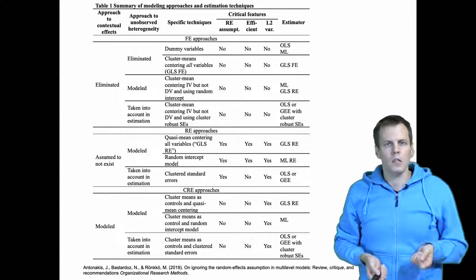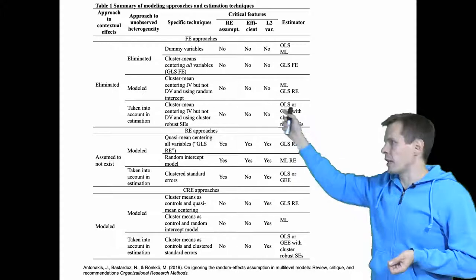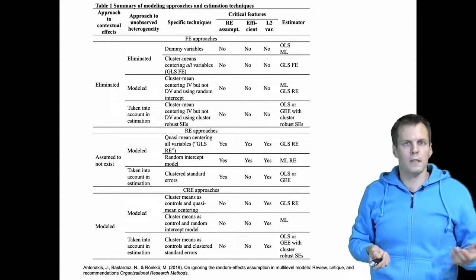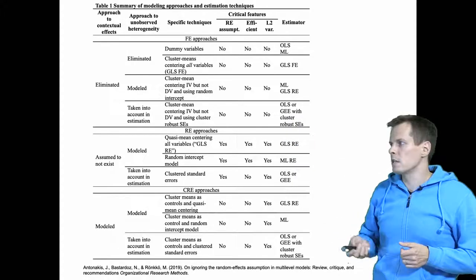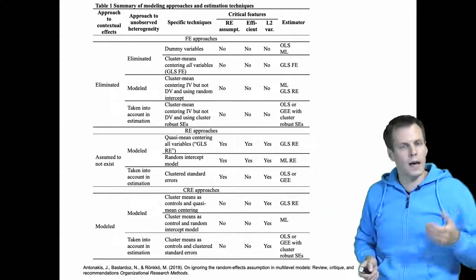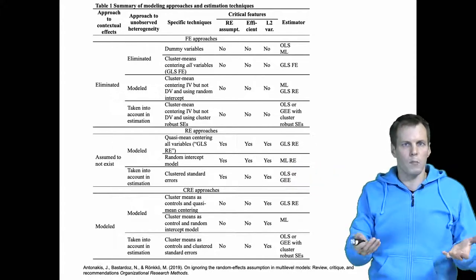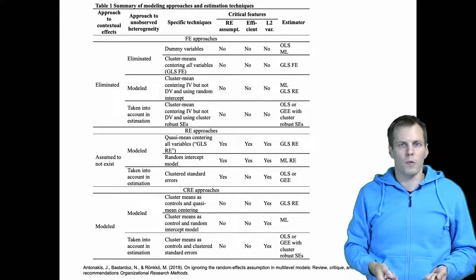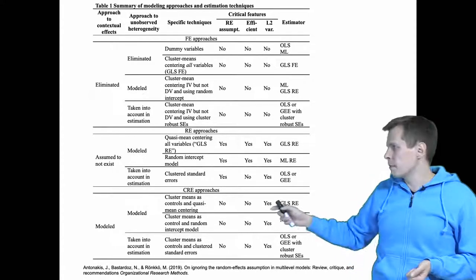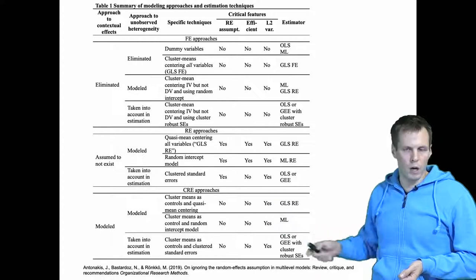The contextual effect can either be eliminated from the data, as is done using all the fixed effects approaches; it can be assumed to not exist, as is done using the GLS random effects or maximum likelihood random effects models; or it can be modeled using the correlated random effects model.